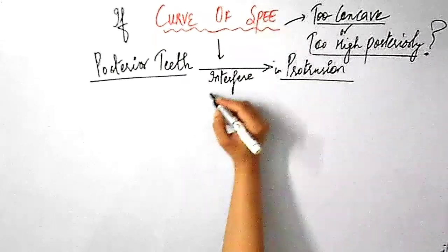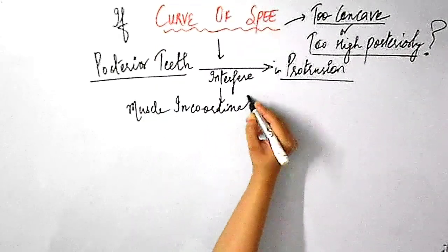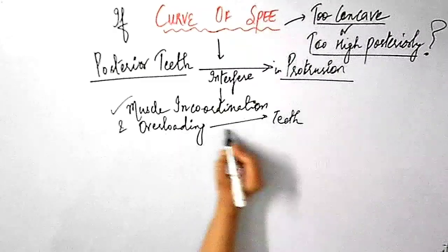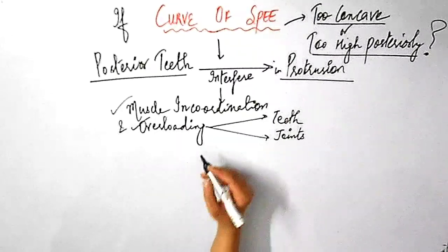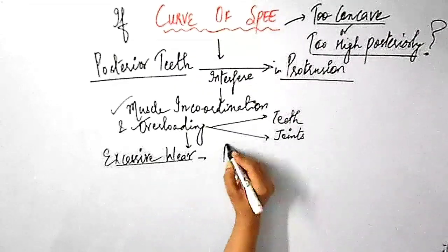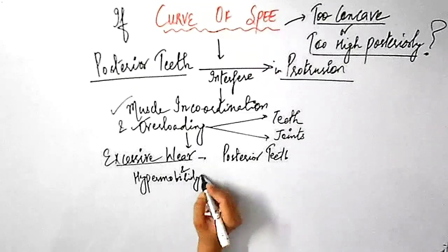And this in turn will activate muscle incoordination and there will be overloading of both teeth as well as joints. And this further would result in excessive wear of posterior teeth and hypermobility. Hence, just ensure that the curve of Spee is not too high posteriorly.